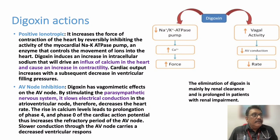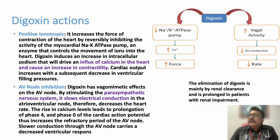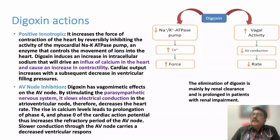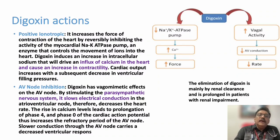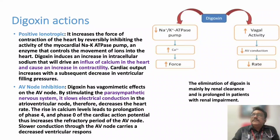Digoxin can decrease the heart rate, which makes it very useful in tachyarrhythmias. Nowadays its use is restricted to cardiac failure with atrial fibrillation with rapid ventricular rate. These two actions — positive inotropic action and AV node inhibition — are both very useful in cardiac failure with tachyarrhythmias. That is why it is mainly indicated in cardiac failure with atrial fibrillation.